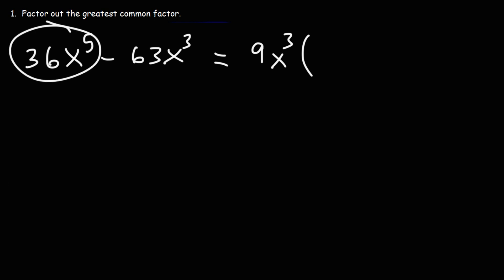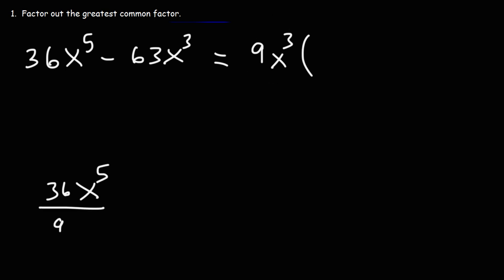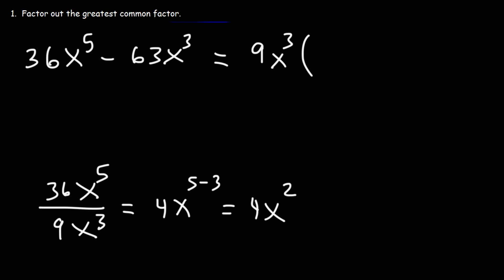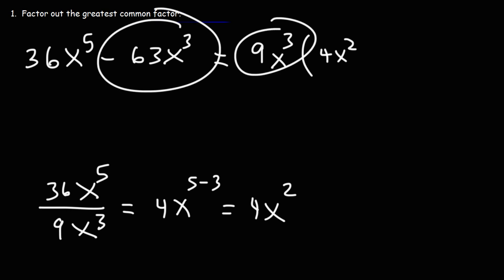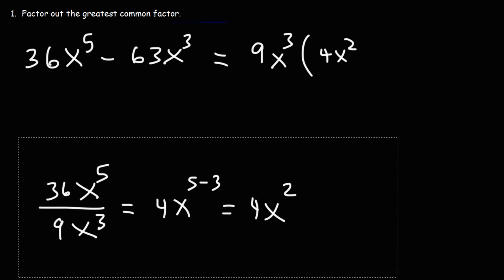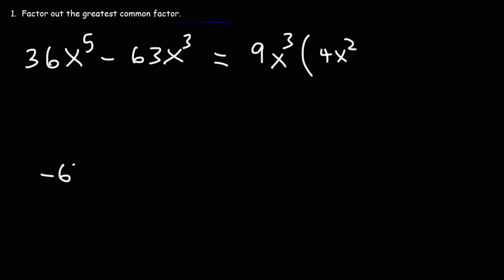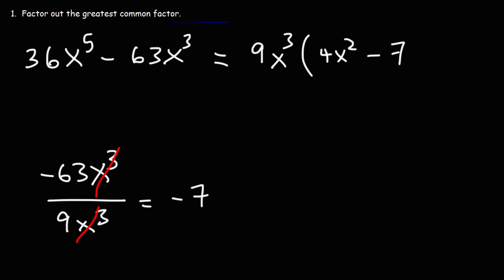If we take 36x to the 5th power and divide it by our GCF: 36 divided by 9 is 4, and x to the 5th divided by x cubed — we subtract the exponents — so we get 4x squared. Next, we divide negative 63x cubed by the GCF; the x cubed terms cancel, and negative 63 divided by 9 is negative 7. So we have minus 7 inside the parentheses.